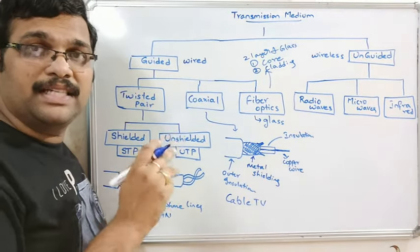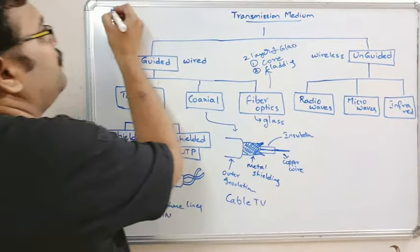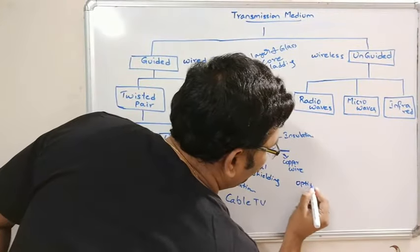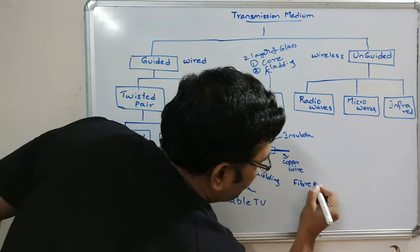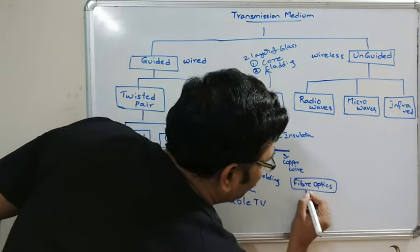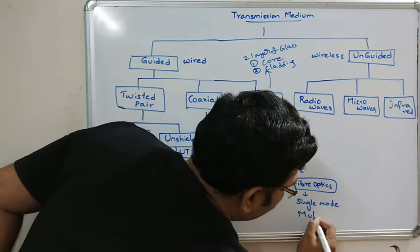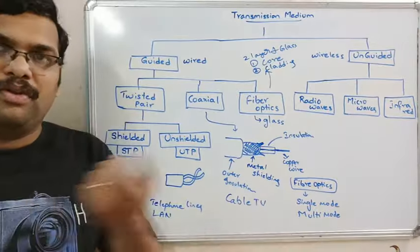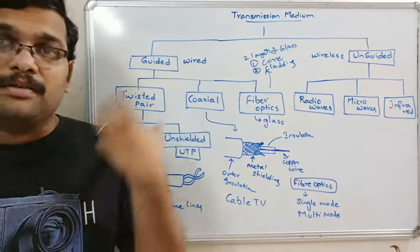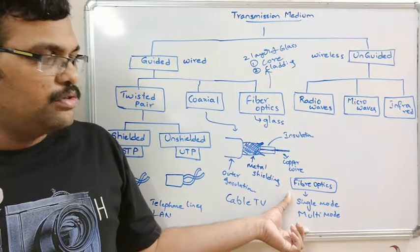Fiber optics can be implemented in two ways: single mode and multi mode. Single mode means only a single data mode can be sent, while multi mode means multiple modes of light can be propagated at the same time.